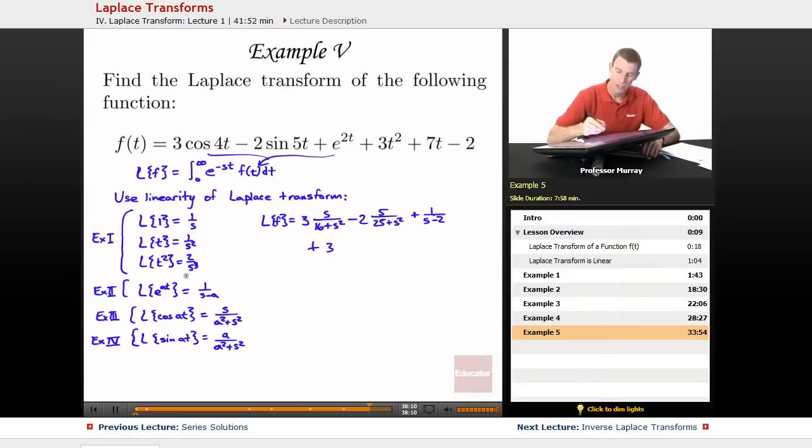Plus 3t squared, plus 3. Now, t squared gives me 2 over s cubed, so 3 times 2 over s cubed, plus 7 times 1 over s squared, minus 2 times 1 over s.